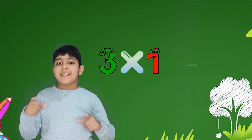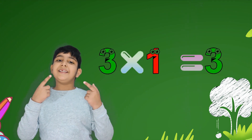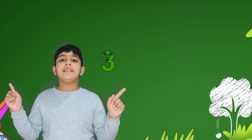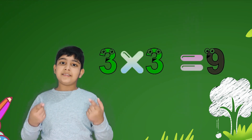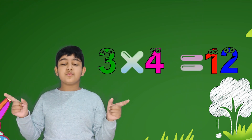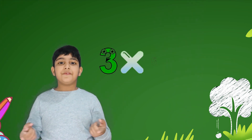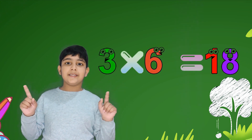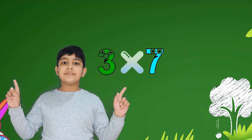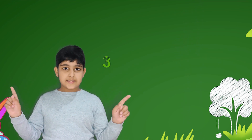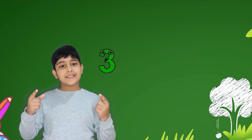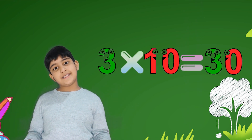3 ones are 3, 3 twos are 6, 3 threes are 9, 3 fours are 12, 3 fives are 15, 3 sixes are 18, 3 sevens are 21, 3 eights are 24, 3 nines are 27, 3 tens are 30.